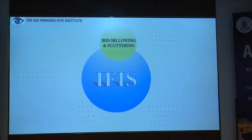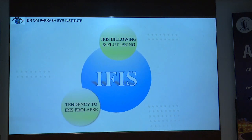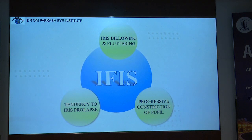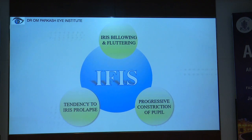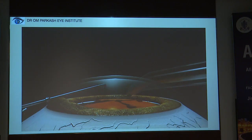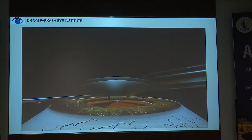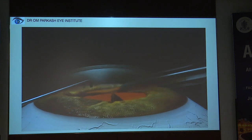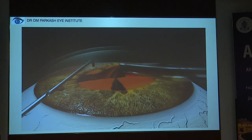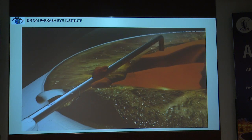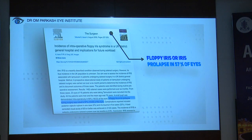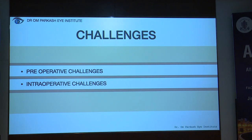IFIS has iris billowing, fluttering, progressive pupillary constriction, and a tendency of iris to prolapse. There is iris billowing, progressive pupillary constriction, and iris prolapsing through the incisions. There is a significant incidence of floppy iris or prolapse in patients using these drugs.